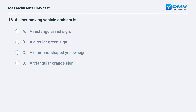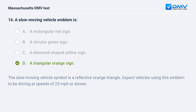A slow moving vehicle emblem is: a. a rectangular red sign. b. a circular green sign. c. a diamond-shaped yellow sign. d. a triangular orange sign. Answer: d. a triangular orange sign. The slow moving vehicle symbol is a reflective orange triangle. Expect vehicles using this emblem to be driving at speeds of 25 miles per hour or slower.